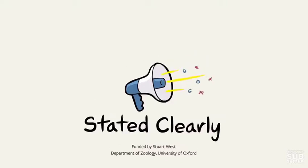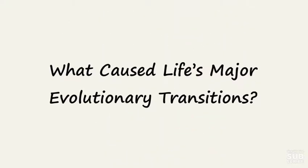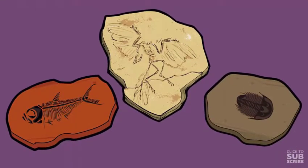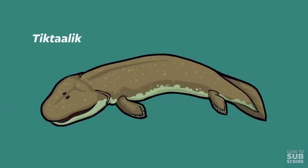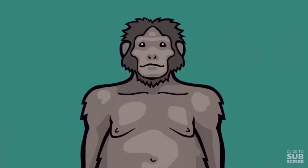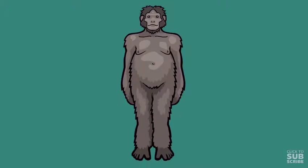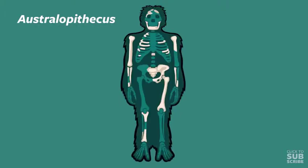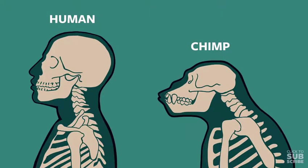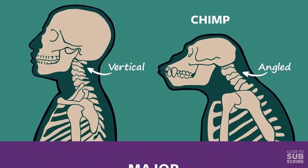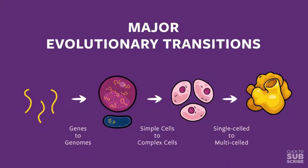Stated Clearly presents: what caused life's major evolutionary transitions? When looking at the fossil record and trying to list the most significant events in our evolutionary history, you might want to list the earliest known fish species able to survive at least temporarily on dry land, or the first known ape fossils that appear to have walked on two legs. While these fossils represent fascinating transitions into new lifestyles, they don't represent large jumps in complexity. To see a truly large evolutionary jump — what researchers call a major evolutionary transition — we have to travel back much further in the fossil record.